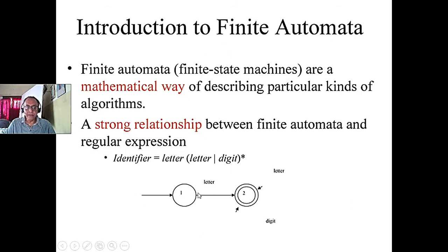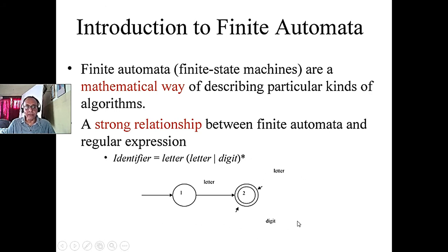Here is an example of a regular expression. In any programming language, an identifier must start with a letter, followed by any combination of letters or digits — the star means zero or more occurrences. This is a regular expression, and it also corresponds to a finite state machine. The first character must be a letter, and then any combination of letters or digits follows. This illustrates the strong relationship between finite automata and regular expressions.